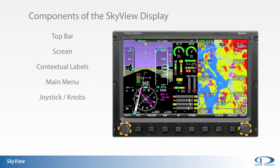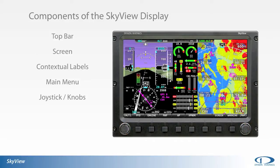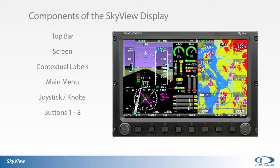The left and right joysticks that bookend the buttons along the bottom of the display can be manipulated as joysticks, knobs, or push buttons. The joystick's current assigned function is denoted in the associated right or left bottom corner of the screen. Eight buttons correspond to the label denoted along the bottom of the screen, referenced in the SkyView user guide as buttons one through eight starting with the leftmost key. A light sensor is incorporated into the display between buttons four and five, allowing SkyView's high-resolution display to dim or brighten based on the ambient light level.